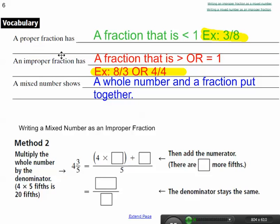Some vocabulary words that we need to be proficient at before we get started is what does a proper fraction mean? A proper fraction is what we traditionally think of as a fraction. So 3 over 8 is a proper fraction. My numerator is less than my denominator.